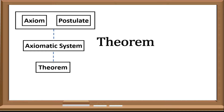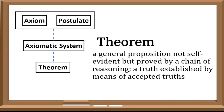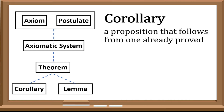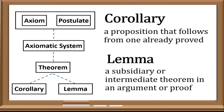Next would be theorem. A theorem is defined as a general proposition not self-evident, but proved by a chain of reasoning — a truth established by means of accepted truths. Under the theorem, there are theorems that are created from the theorem itself, and these are called either corollary or lemma. A corollary is defined as a proposition that follows from one already proved, or the theorem itself. While a lemma is a subsidiary or intermediate theorem in an argument or proof. In other words, corollary and lemma are statements or propositions that are derived or formulated from a theorem.